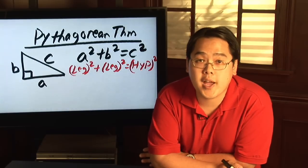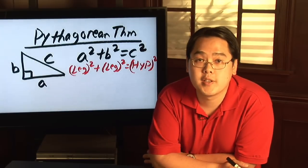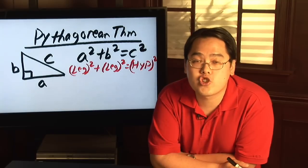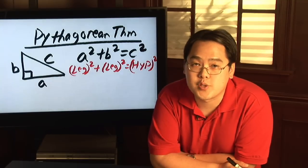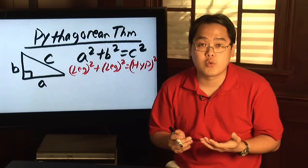The Pythagorean Theorem was named after the Greek mathematician Pythagoras and it's a right triangle exclusive, meaning it's a theorem that applies only to right triangles.